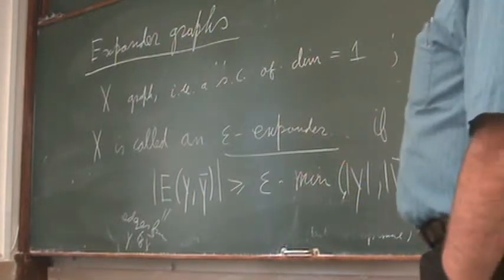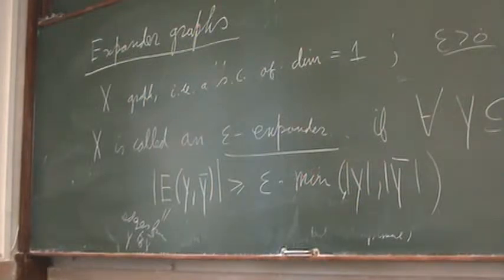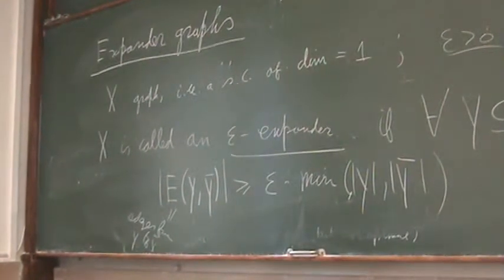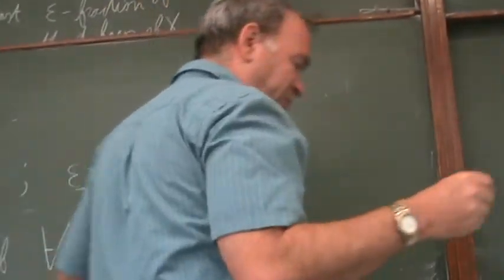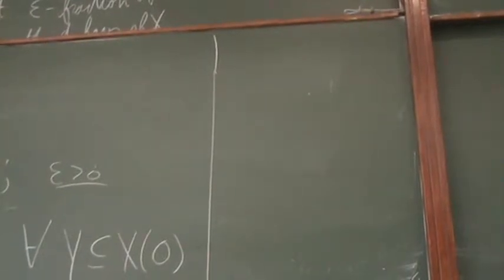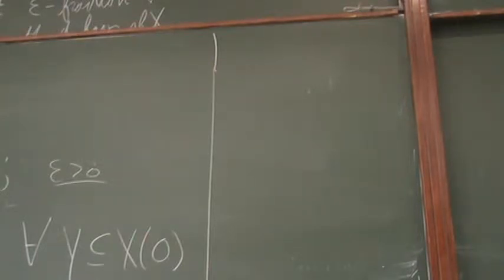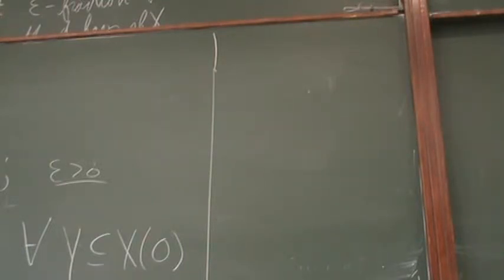This works well even for the empty set. Now, as I said, if the graph is connected, then every connected graph is an epsilon expander for some epsilon, because you can take all subsets and take the minimum epsilon. But what we really care about is having an infinite family of graphs which are epsilon expanders with the same epsilon — that's the name of the game.